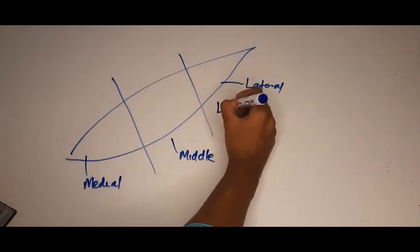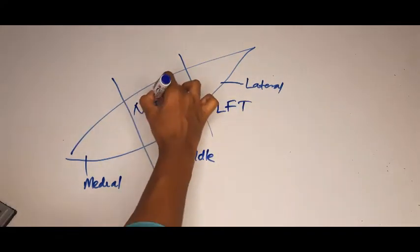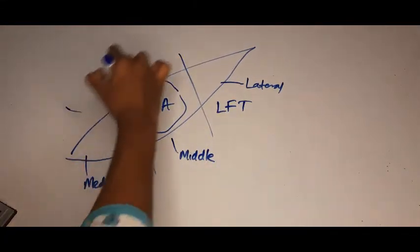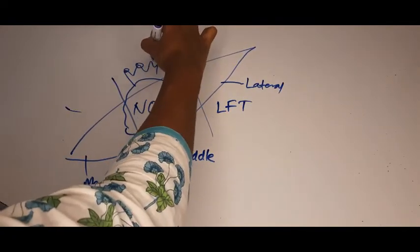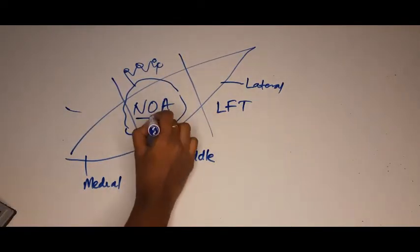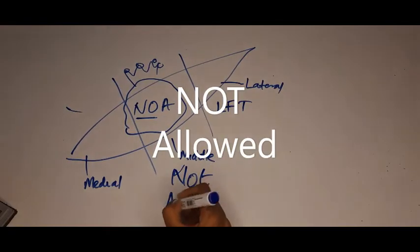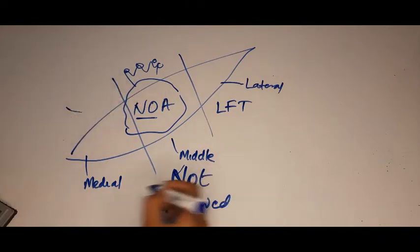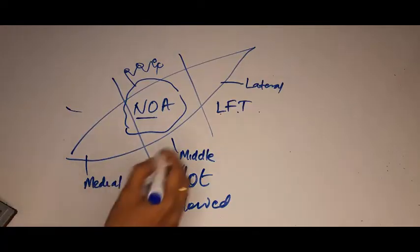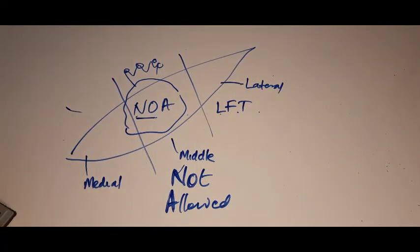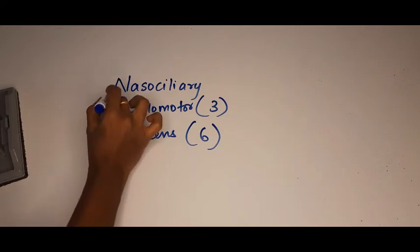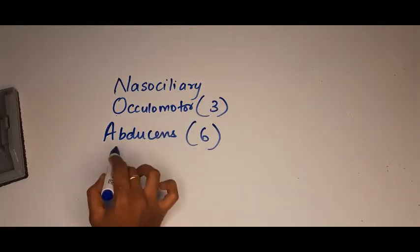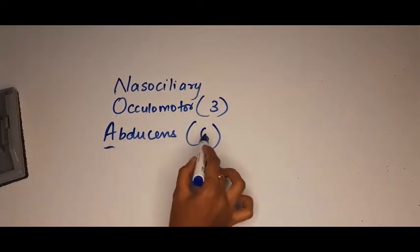For lateral, you need to remember the letters L, F, T. For medial, N, O, A. Medial is very precious place. It's secured. It's like these two are bodyguards for this queen. So no one's allowed inside. No. N, O. Not allowed. N, O, A. So let's first look at NOA. N stands for nasociliary. O for oculomotor, which is cranial nerve number three. And last one, A is abducens cranial nerve number six.